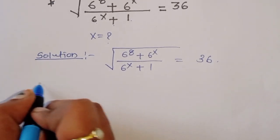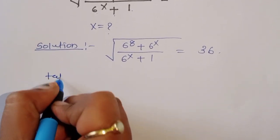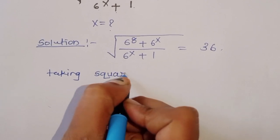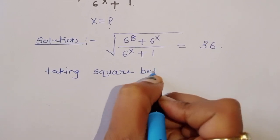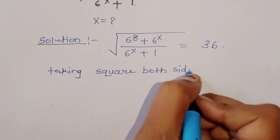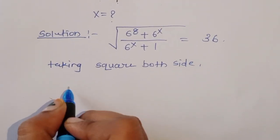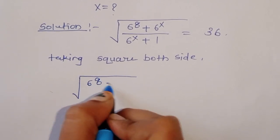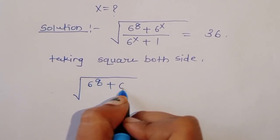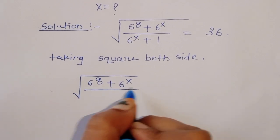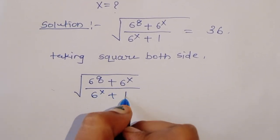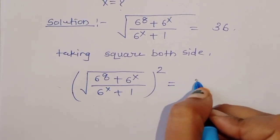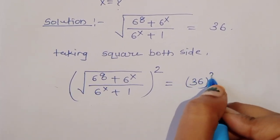Taking the square of both sides: 6 raised to 8 plus 6 raised to x, divided by 6 raised to x plus 1, whole squared, is equal to 36 squared.